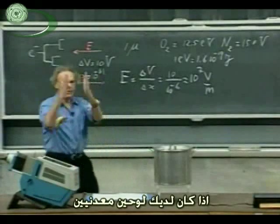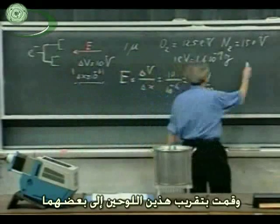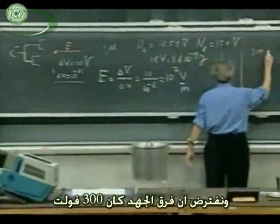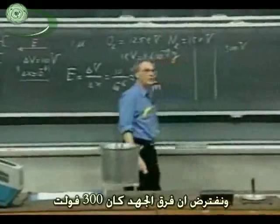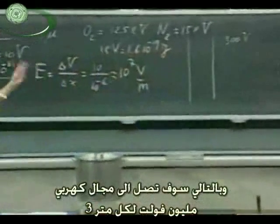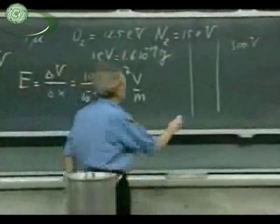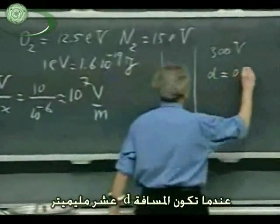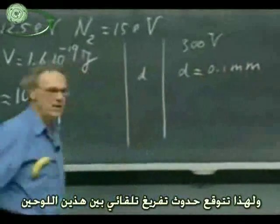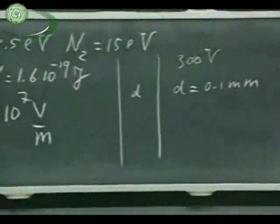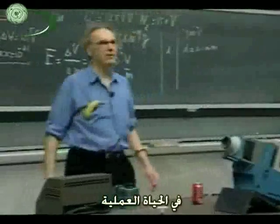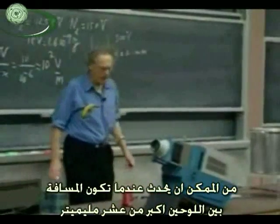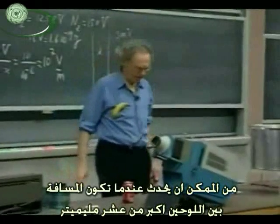If you had two parallel plates and brought them closely together with a potential difference of 300 volts, you would reach an electric field of 3 million volts per meter when the distance d is about 1/10 of a millimeter. That's when you expect spontaneous discharge between the plates. In practice, however, it will probably happen when the plates are further apart than 1/1000 of a millimeter.